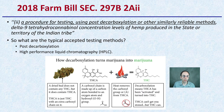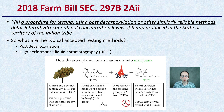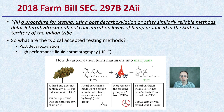So what does that section refer to? It specifically states a procedure for testing using post-decarboxylation or other similar reliable methods for delta-9-THC concentration levels of hemp produced in the state, territory, or Indian tribe. Decarboxylation takes THCA, heats it, and creates delta-9-THC by removing that carboxyl group — essentially converting the acid form of THC to get delta-9-THC.